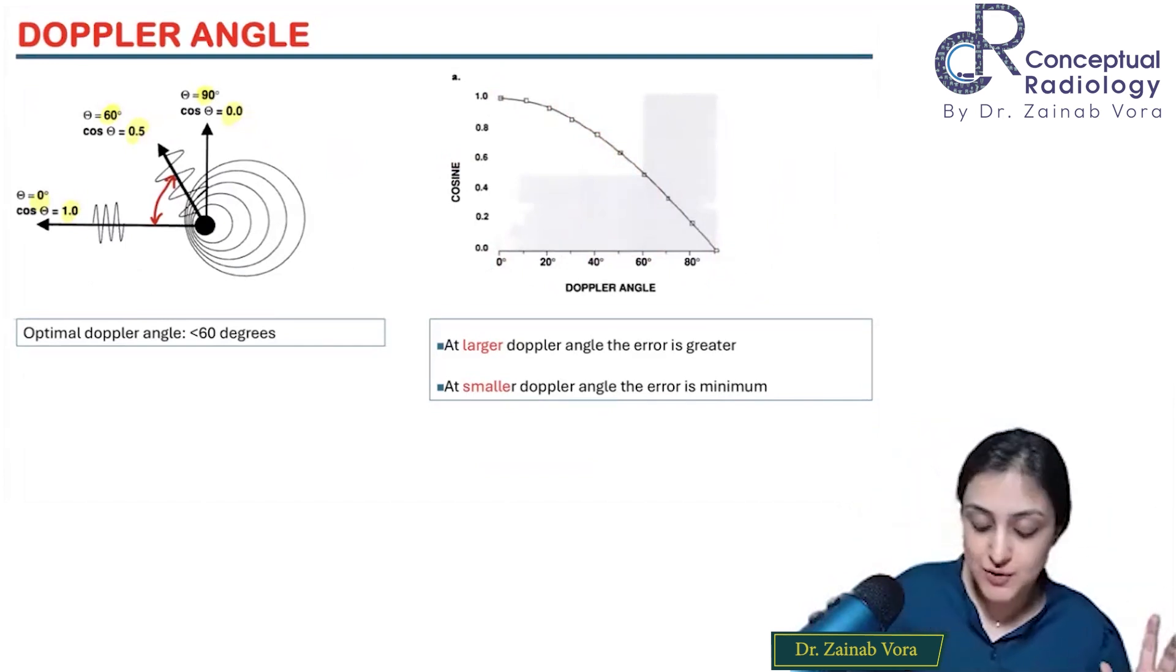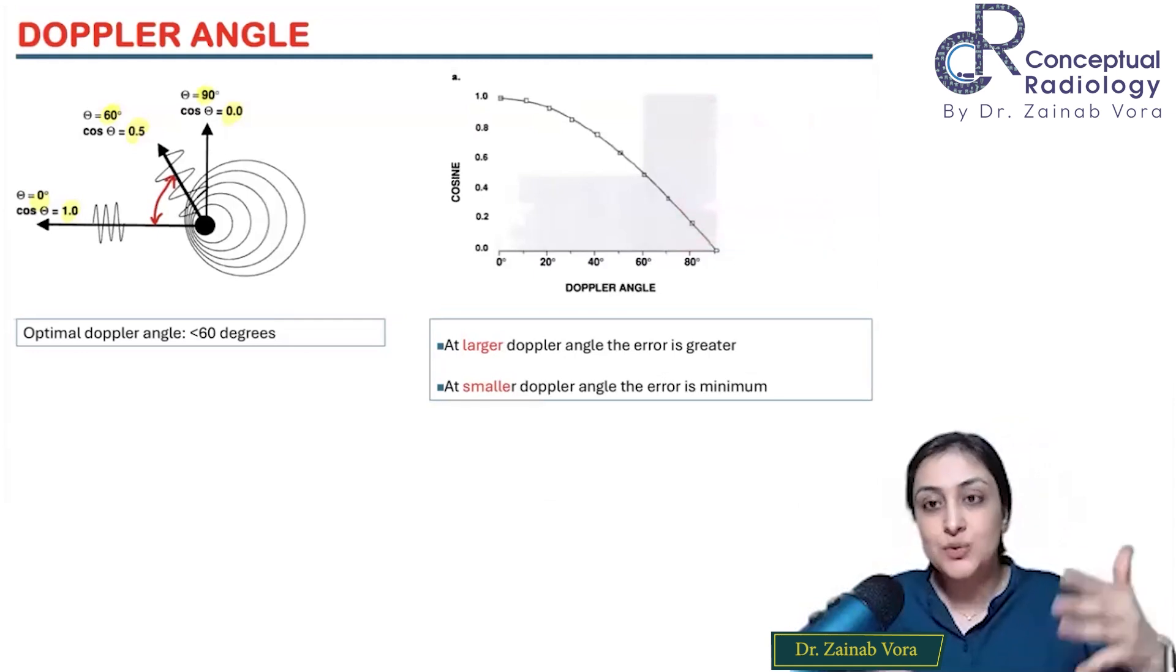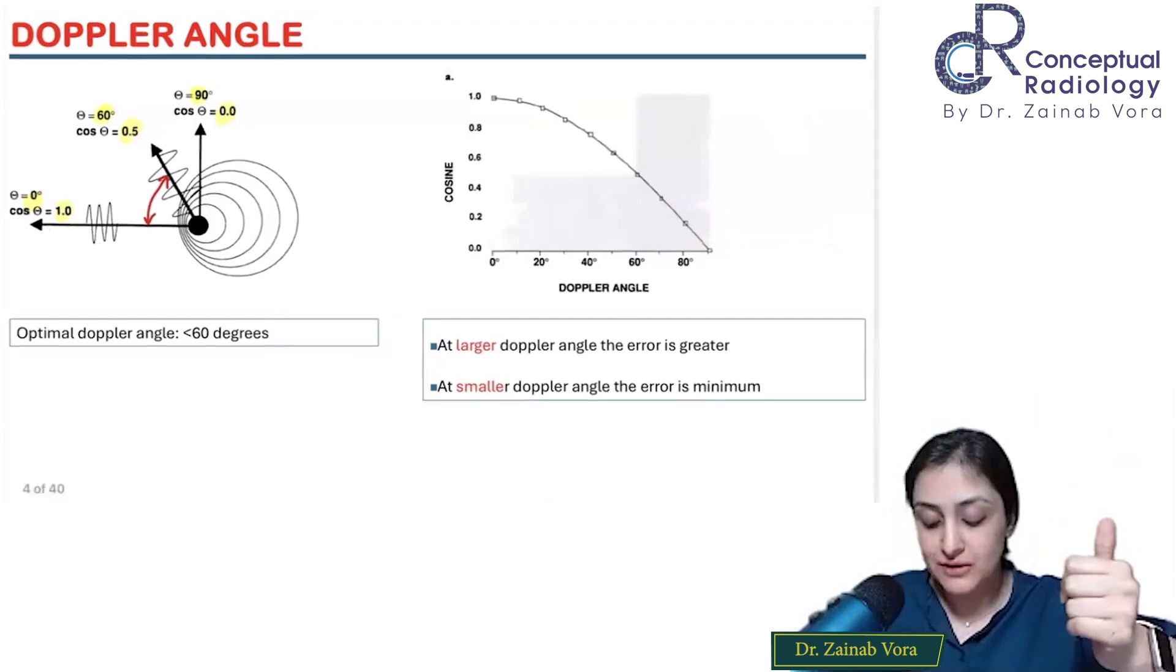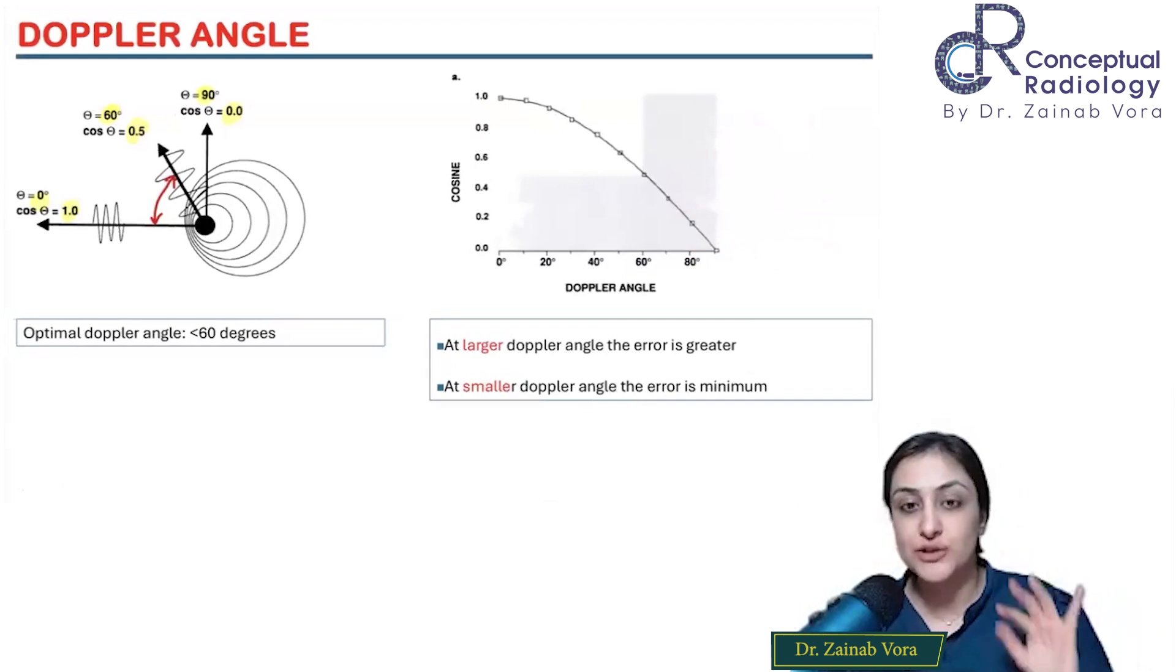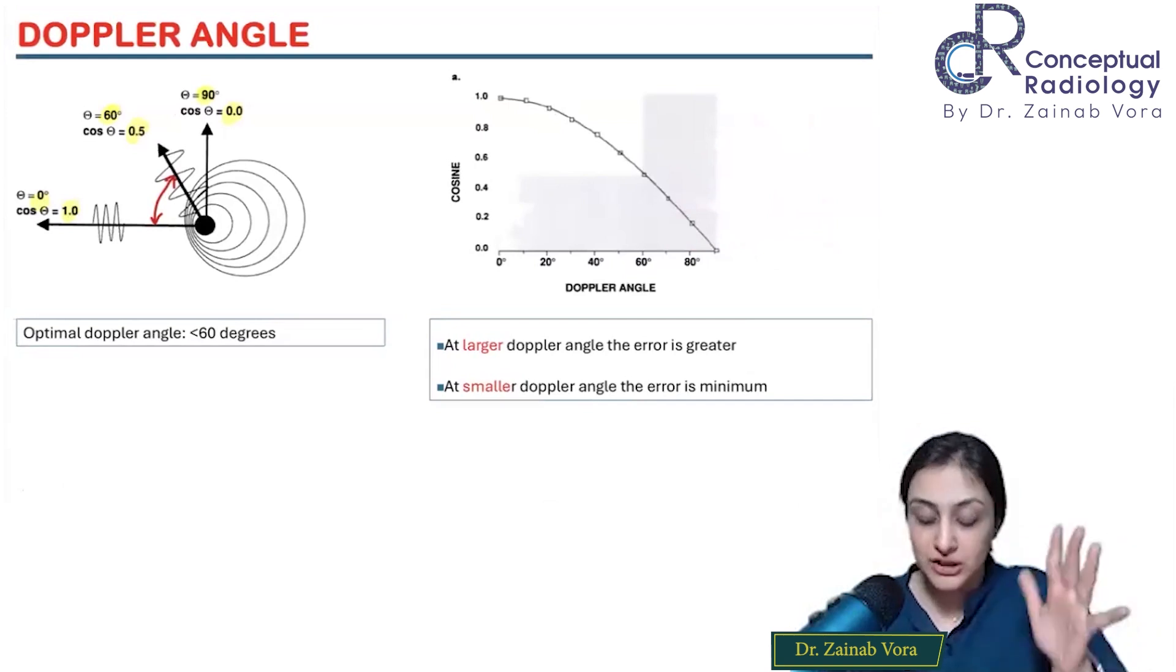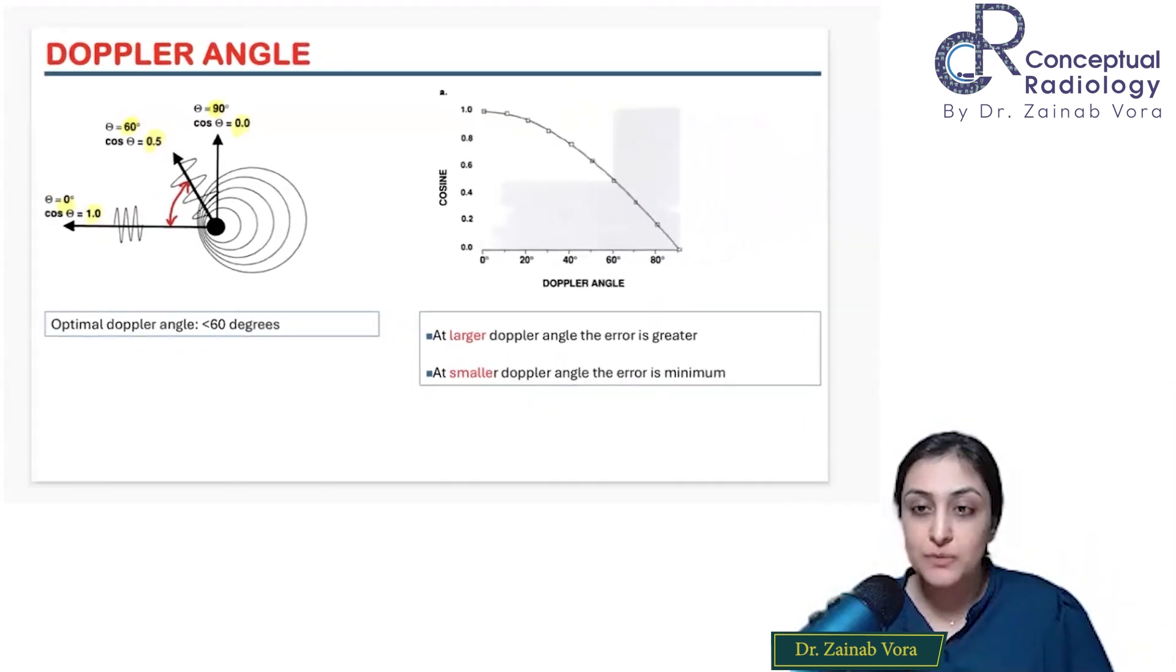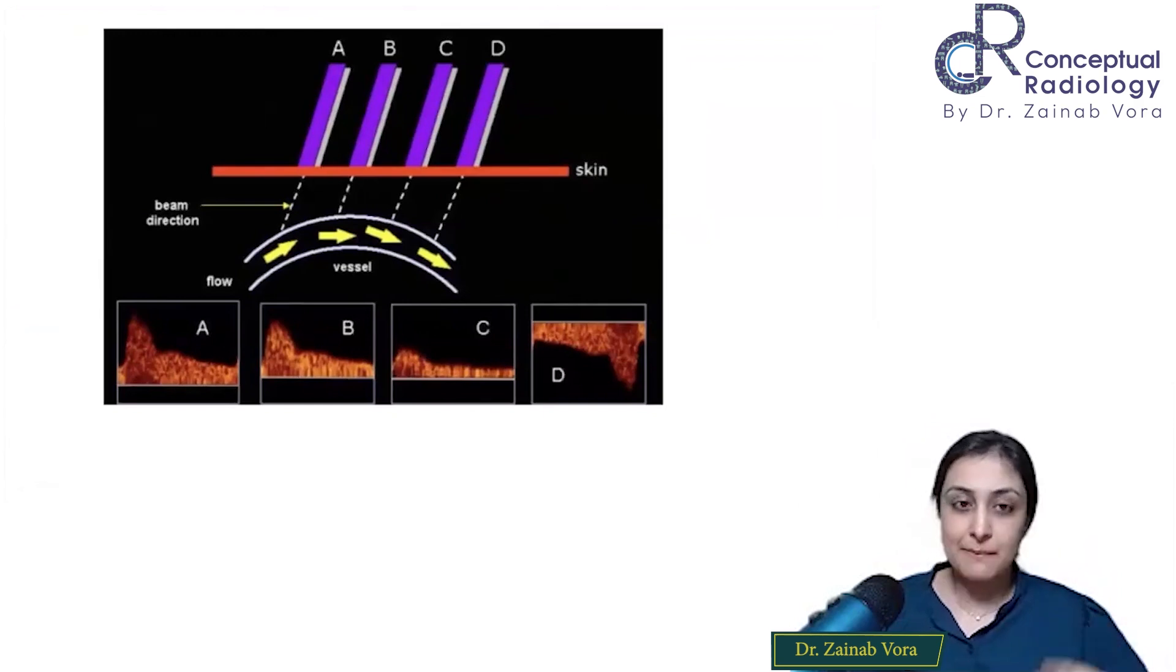I don't want to be more than 60 degrees. Let's say this is how my probe is placed and my vessel is like this. What I'll do is try to get an angle correct. I'll try to change the patient position and somehow get an angle of the vessel like this. As the Doppler angle increases, error is greater. As Doppler angle decreases, error is minimum.